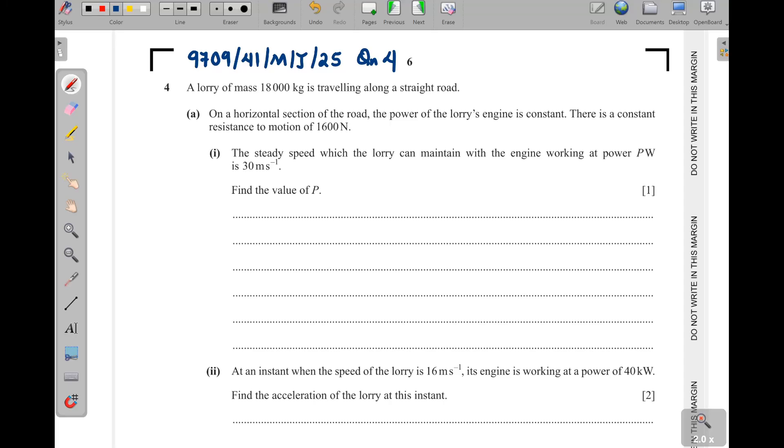Question four is coming from work, power, and energy, and also motion on an inclined plane. We can see that a lorry of mass 18,000 kilograms is traveling along a straight road. On a horizontal section of the road, the power of the lorry's engine is constant. There is a constant resistance to motion of 1,600 newtons. Then part one: the steady speed which the lorry can maintain with the engine working at the power P watts is 30 meters per second. Find the value of P.